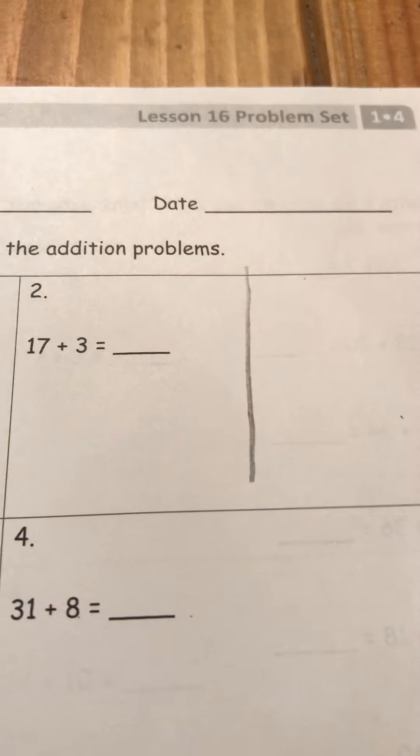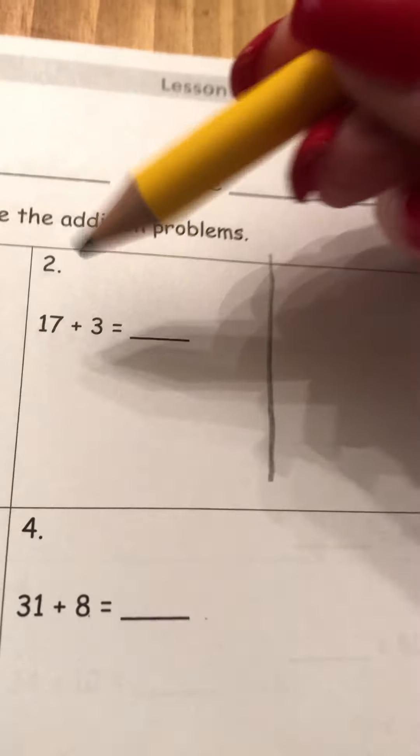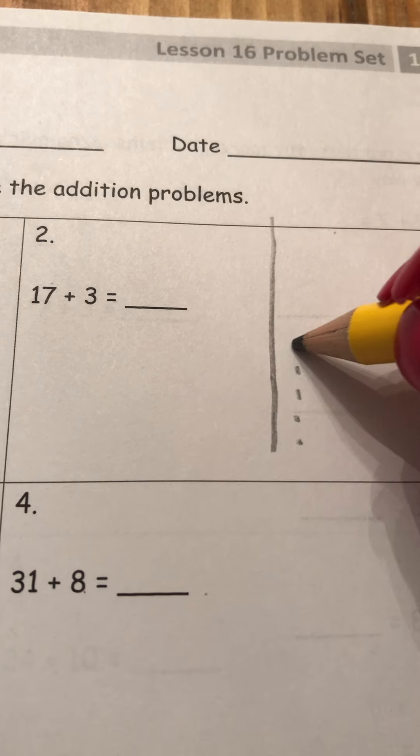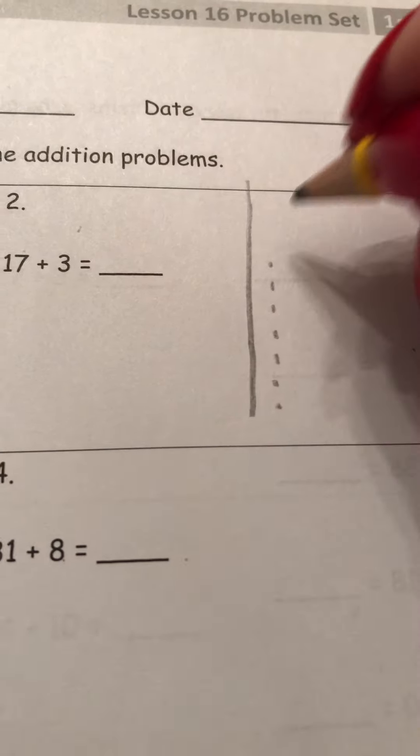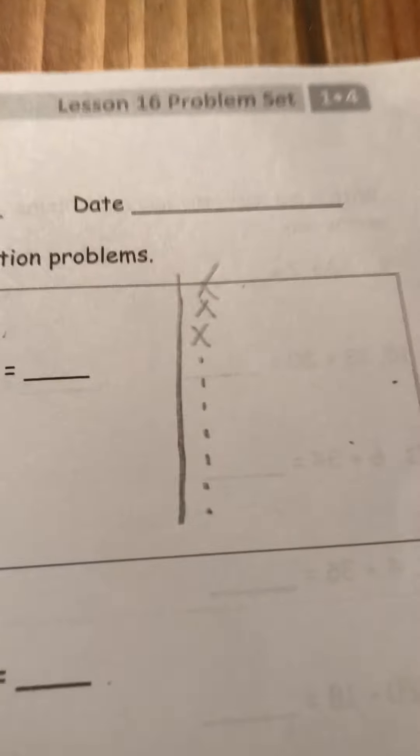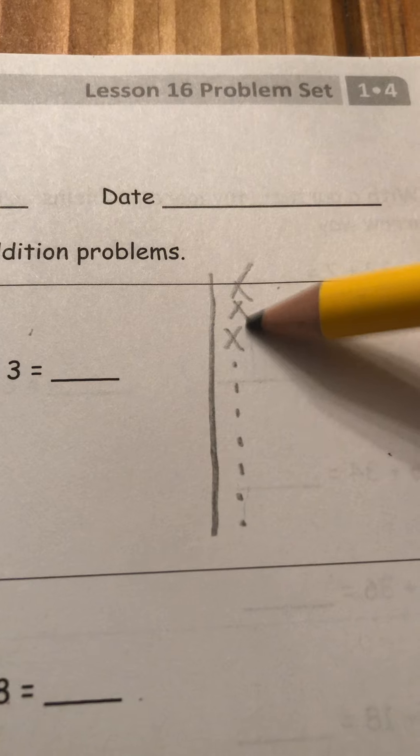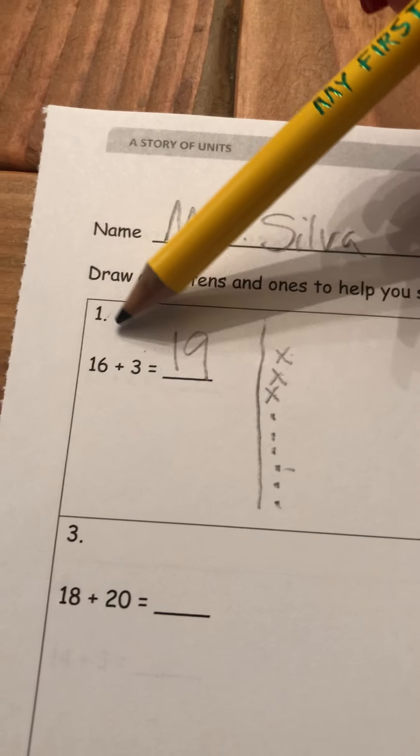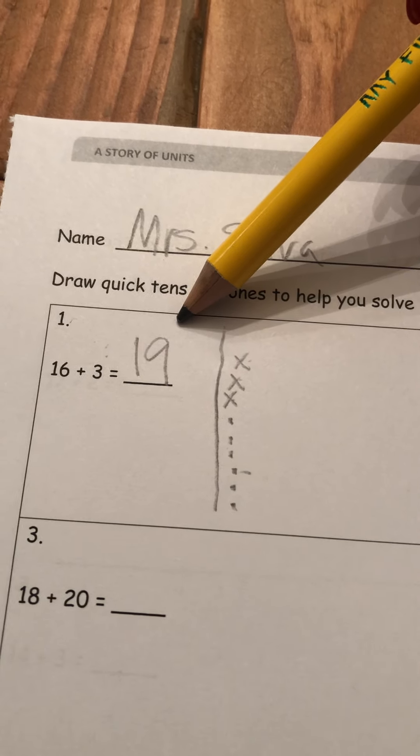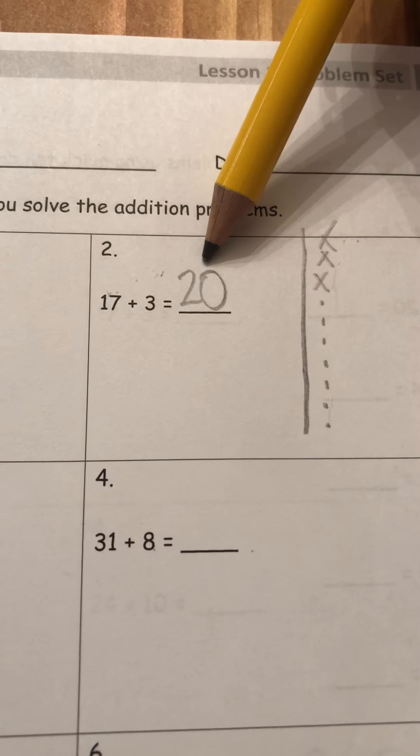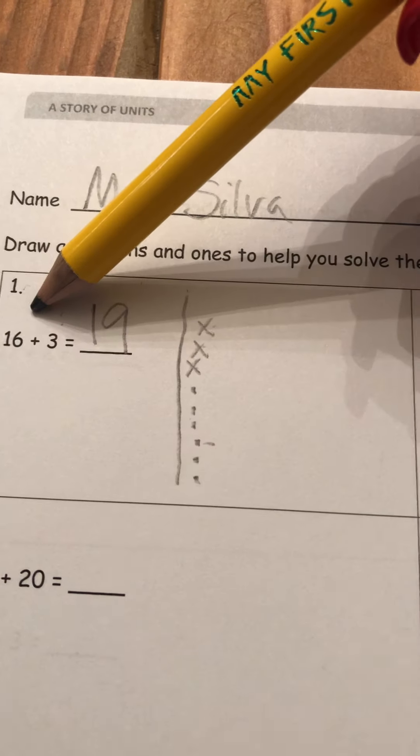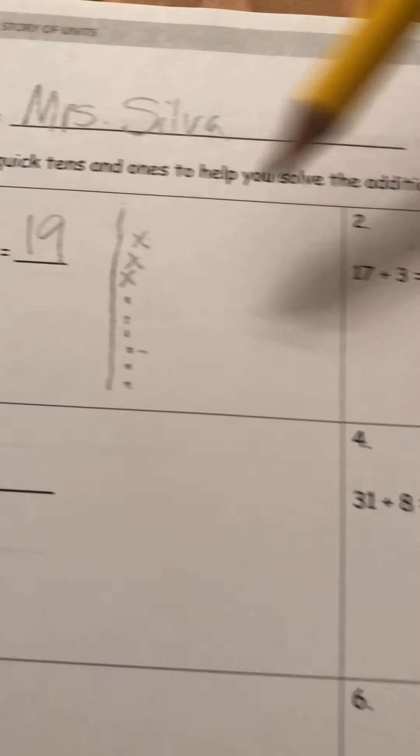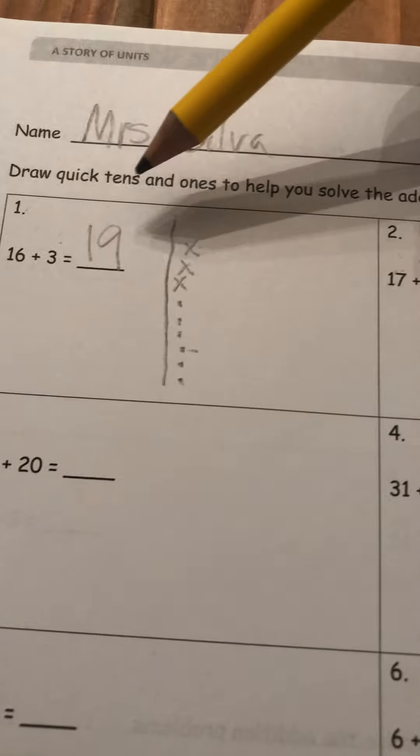Quick ten is, oops, that was a long quick ten. Sorry about that. And seven little dots. One, two, three, four, five, six, seven. And how many X's? One, two, three. And I'm going to count on from 17, 18, 19, 20. Look at that. 16 plus 3 equals 19, and 17 plus 3 equals 20. 17 is one more than 16, so the answer 20 is one more than 19.